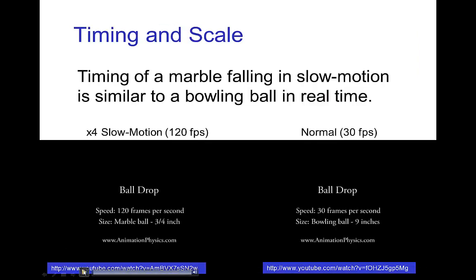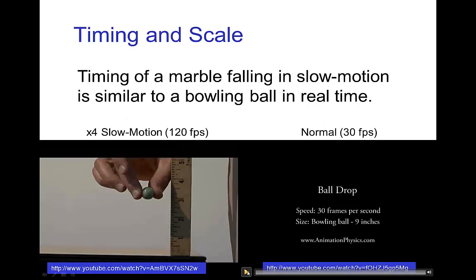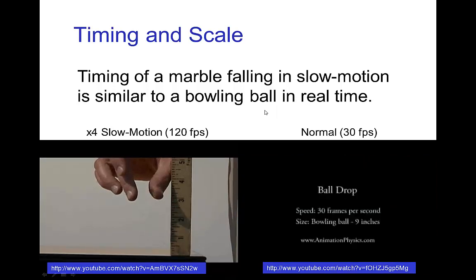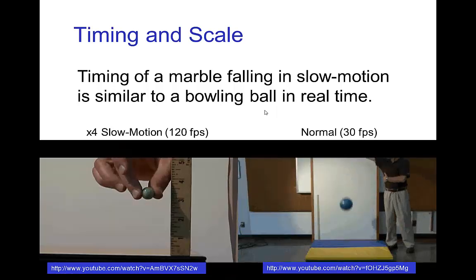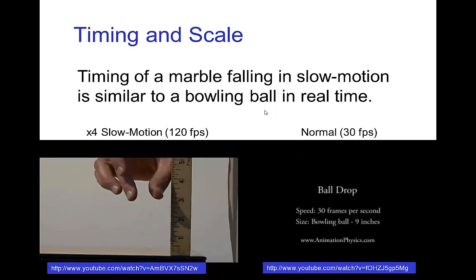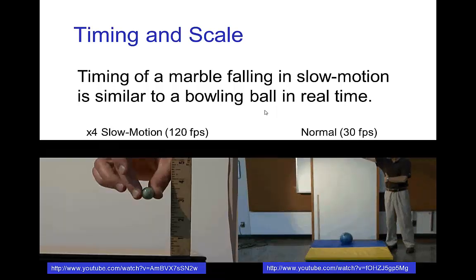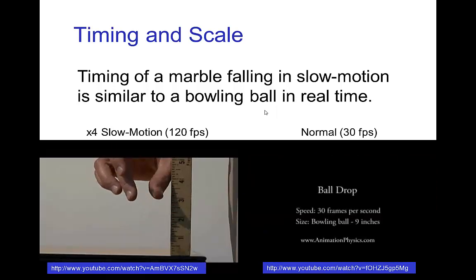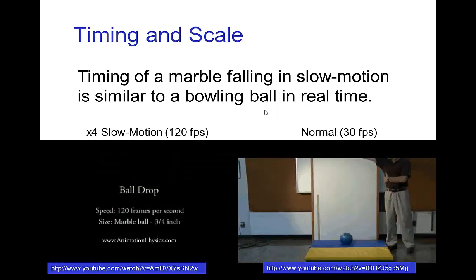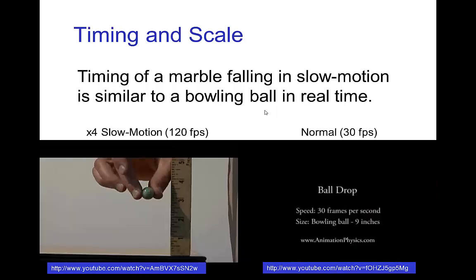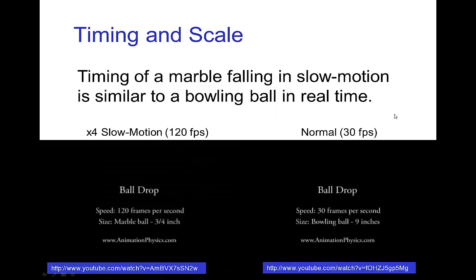Let's see some examples. There's a recording of a marble in slow motion, and a bowling ball being dropped with normal timing. Just looking at these over and over again — if you didn't see the hand and were just looking at the ball — the timing is similar in both, because we've used slow motion for the smaller object, which makes it look as if it's falling similarly to the larger bowling ball.